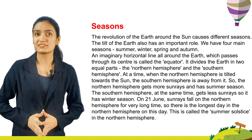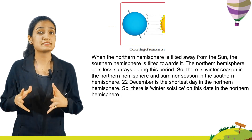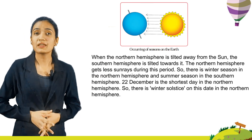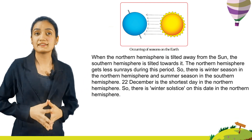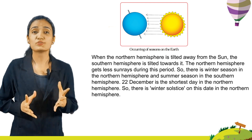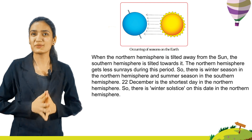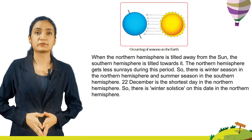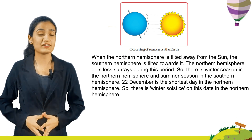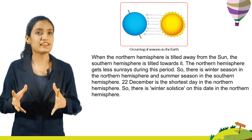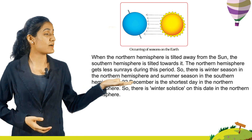This is called the summer solstice in the northern hemisphere. When the northern hemisphere is tilted away from the sun, the southern hemisphere is tilted towards it. The northern hemisphere gets less sun rays during this period, so there is winter season in the northern hemisphere and summer season in the southern hemisphere. 22nd December is the shortest day in the northern hemisphere, so there is winter solstice on this day in the northern hemisphere. Here you can see the picture of seasons occurring on the earth.